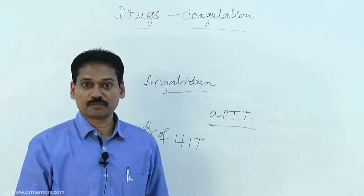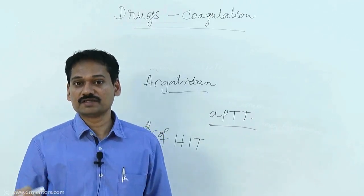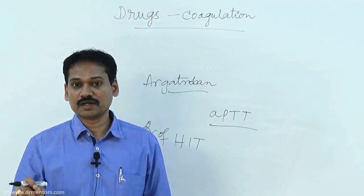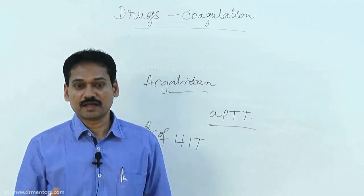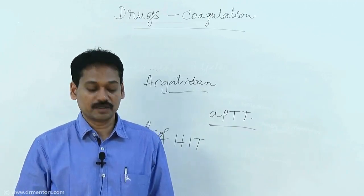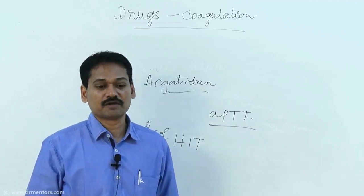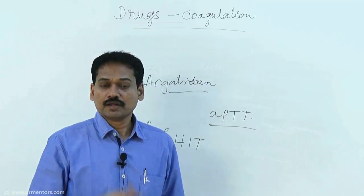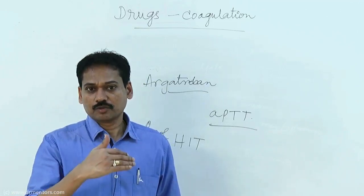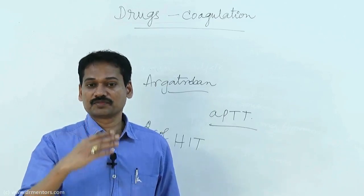Heparin has an antidote, but in case of overdosage, direct thrombin inhibitors do not have an antidote — that is the most important point. All these agents — lepirudine, bivalirudine, argatroban, etc. — are given by parenteral route.